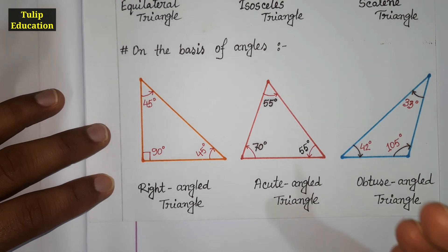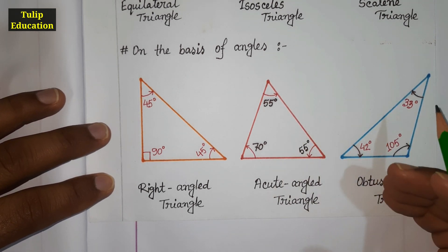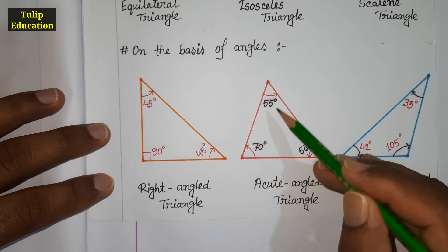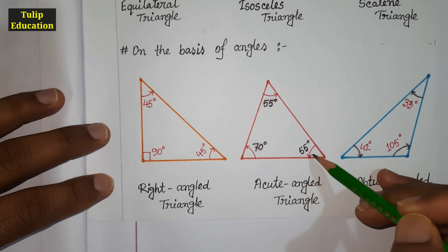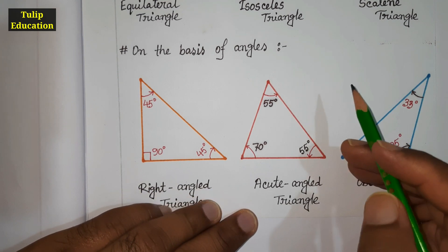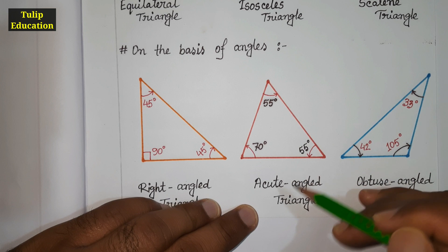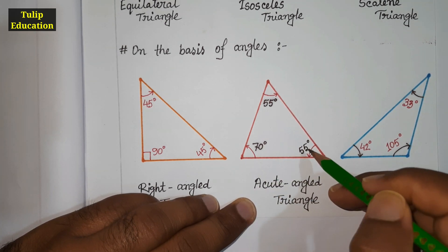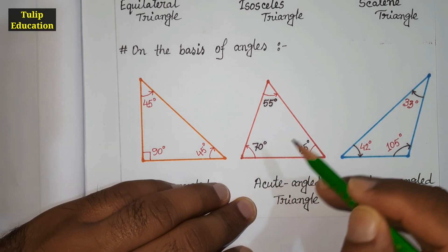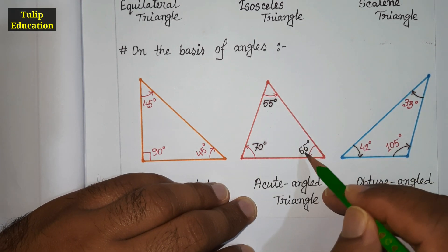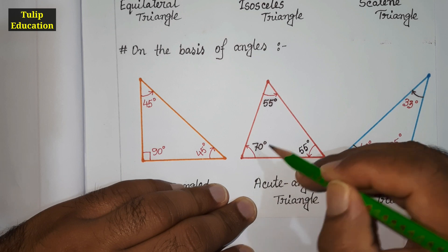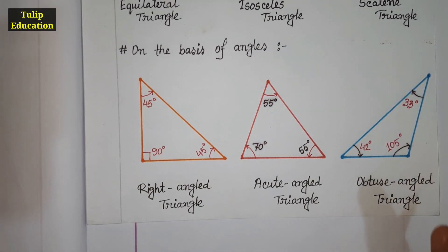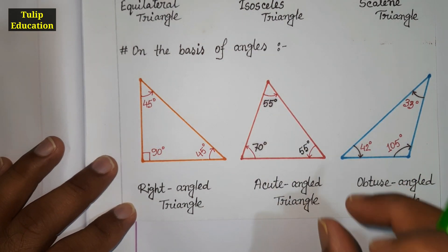In an acute angle triangle, all three angles are less than 90 degrees. In this triangle, one angle is 70 degrees and the other two angles are 55 degrees and 55 degrees. Since all angles are less than 90 degrees, this is called an acute angle triangle. If we add 70 plus 55 plus 55, the summation is 180 degrees. For instance, angles could also be 60 degrees, 40 degrees, and 80 degrees, because the summation of interior angles of any triangle must be 180 degrees.